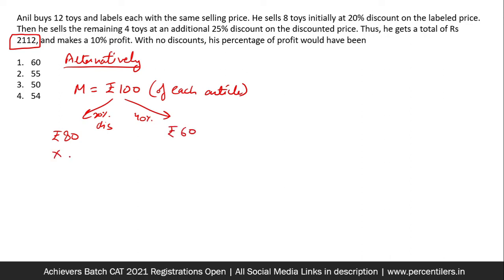Eight articles, eight toys were sold at 80 rupees and four toys were sold at 40 rupees. This would sum up to 640 and this would be 240. So the total selling price would become 880 rupees, which is after 10% profit. So from here, I'm going to find CP also as 800.